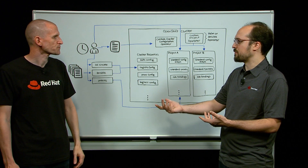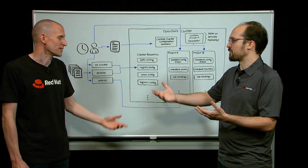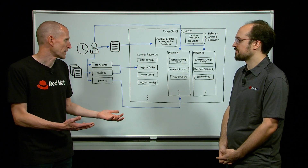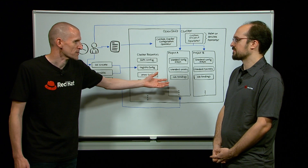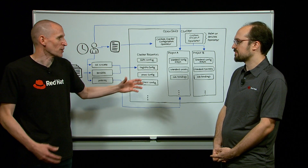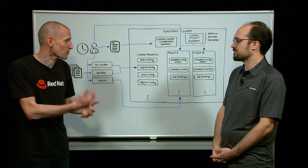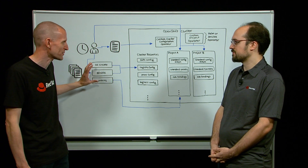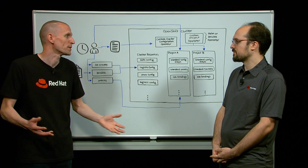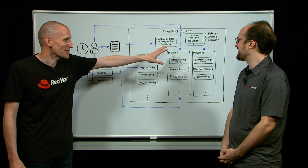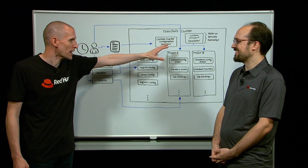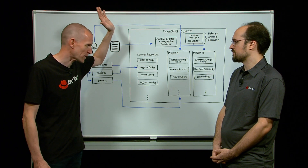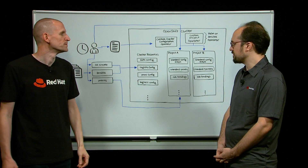Another use case we've talked about is credentials — we usually have to roll them. A common case is Git credentials: all these projects are probably pulling from a Git repository somewhere and it's authenticated. When we need to roll the credentials with the old process, we make the change and then have to run one of these processes, iterate over the projects, and hope that it works. With the custom project operator, we make our credential change and the operator will go through and reconcile everything to make sure the credentials are correct.